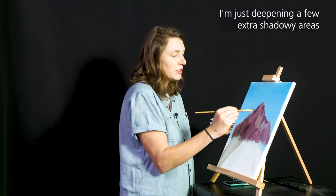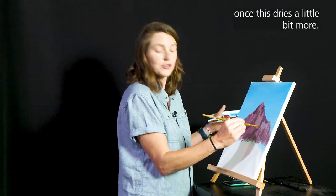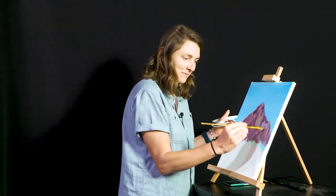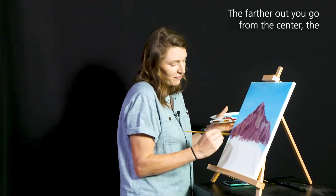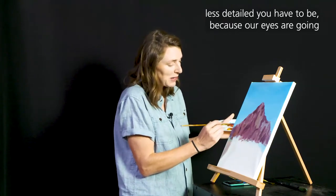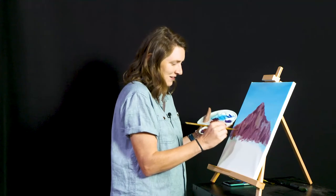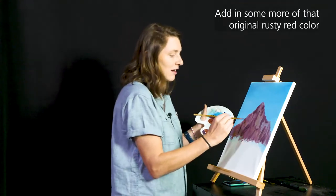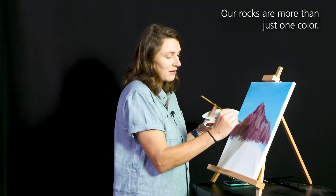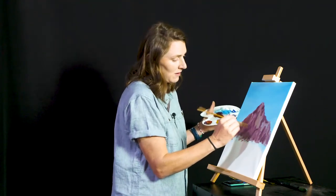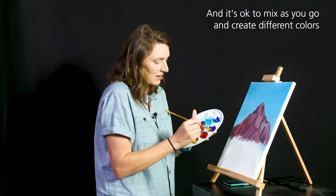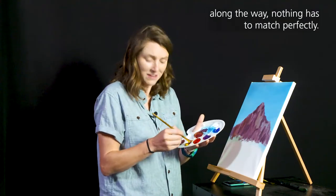Just deepening a few extra shadowy areas on the Watchman here. And then we can start to add in our highlights once this dries a little bit more. The farther out you go from the center the less detailed you have to be because our eyes are going to be on the focal point here. After that as long as you have the general shapes that's fine. You can add in some more of that original rusty red color to get more variety on our rock face. Our rocks are more than just one color. And it's okay to mix as you go and create different colors along the way. Nothing has to match perfectly.